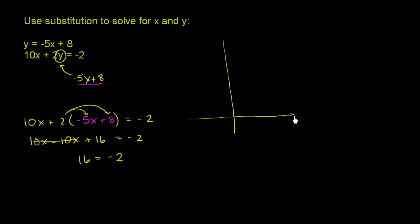So let me just graph these just to make it clear. This first equation is already in slope y-intercept form. So it looks something like this. That's our x-axis. This is our y-axis. And it's negative 5x plus 8.